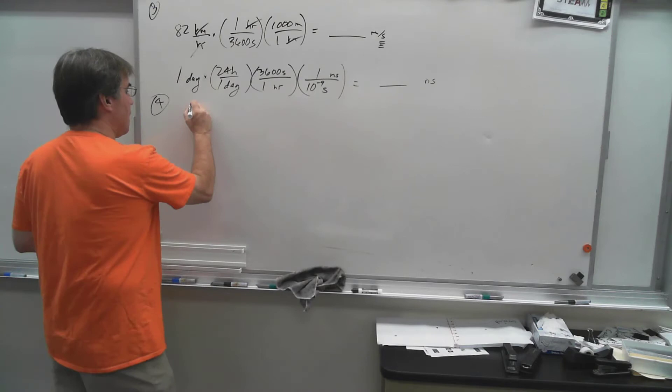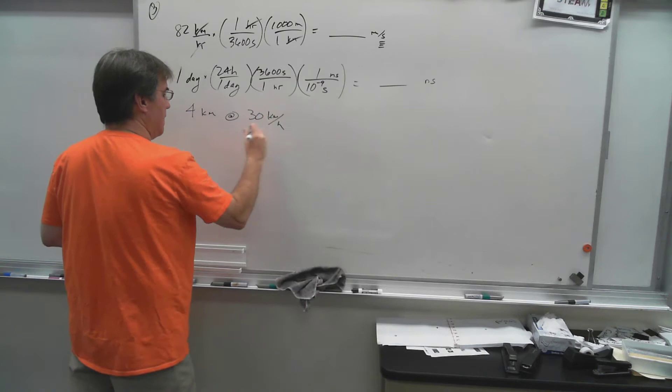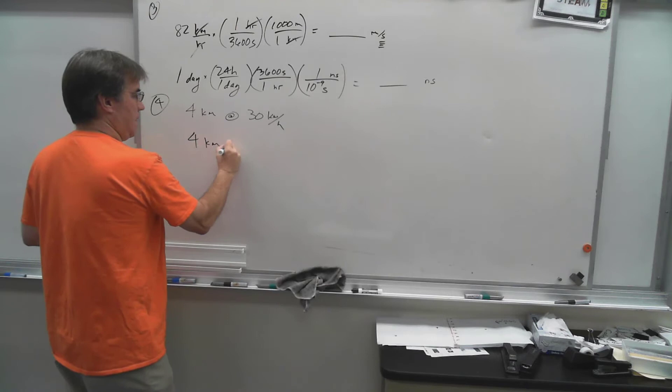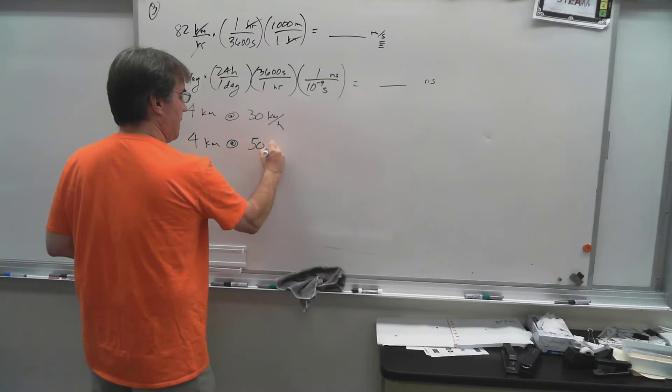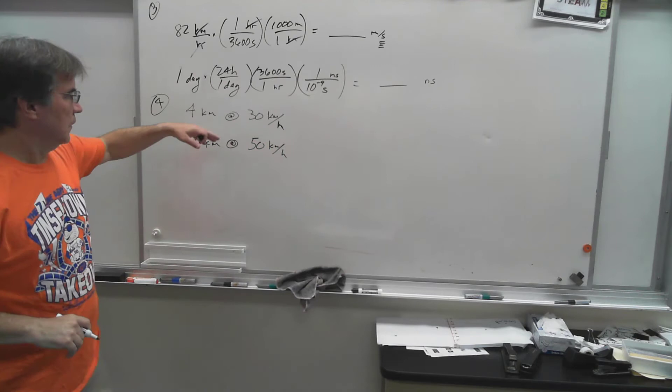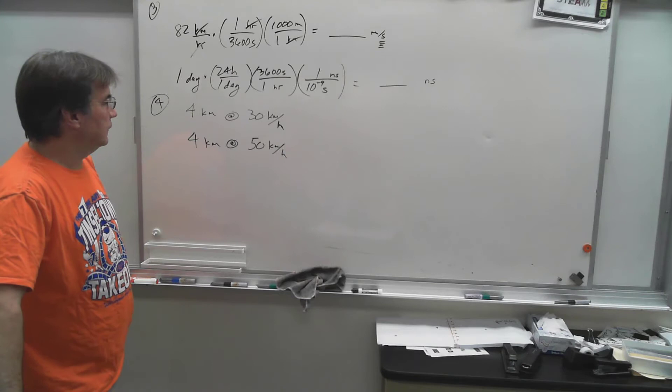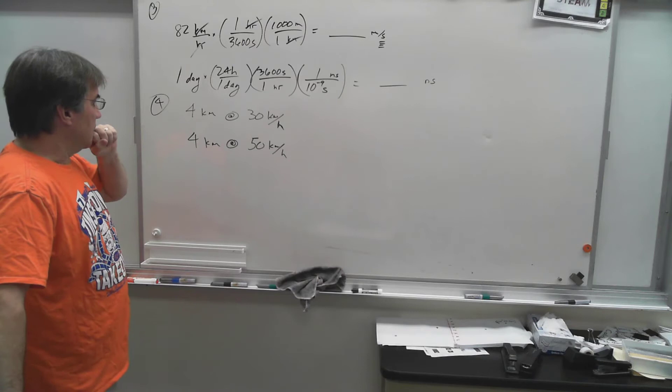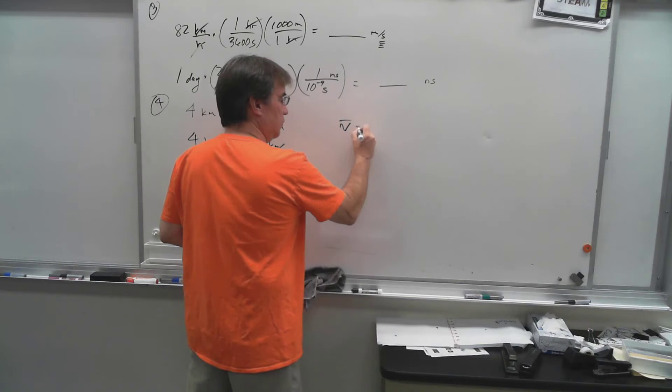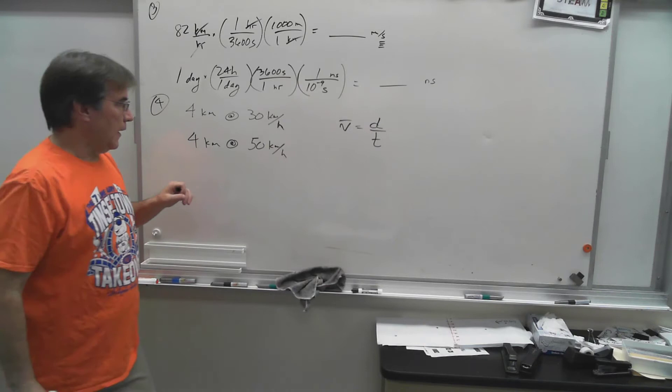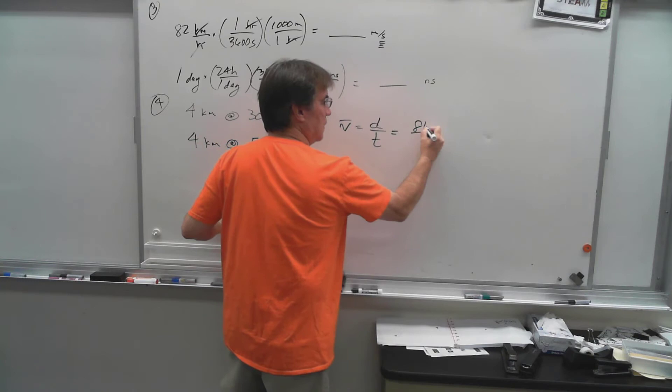How about four? You drive four kilometers at 30 kilometers per hour, and then you drive another four kilometers at 50 kilometers per hour. And your first hunch is to say, oh well, then my average speed is going to be 40. But it doesn't work out that way because you're going to spend a different amount of time doing each. So average velocity is displacement over time.